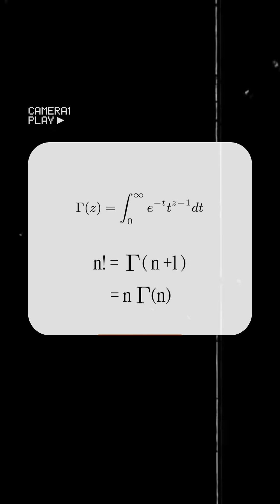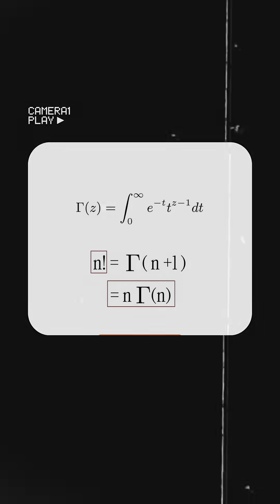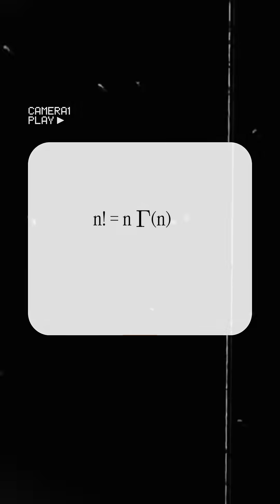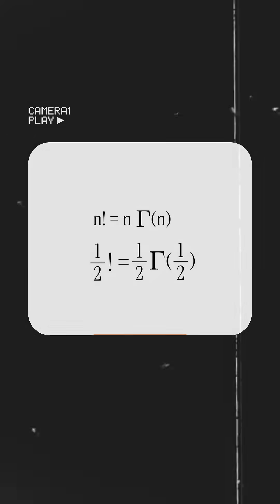To solve this, they invented the gamma function where n factorial equals n multiplied by gamma function of n. So according to that, 1/2 factorial would be 1/2 multiplied by gamma function of 1/2.